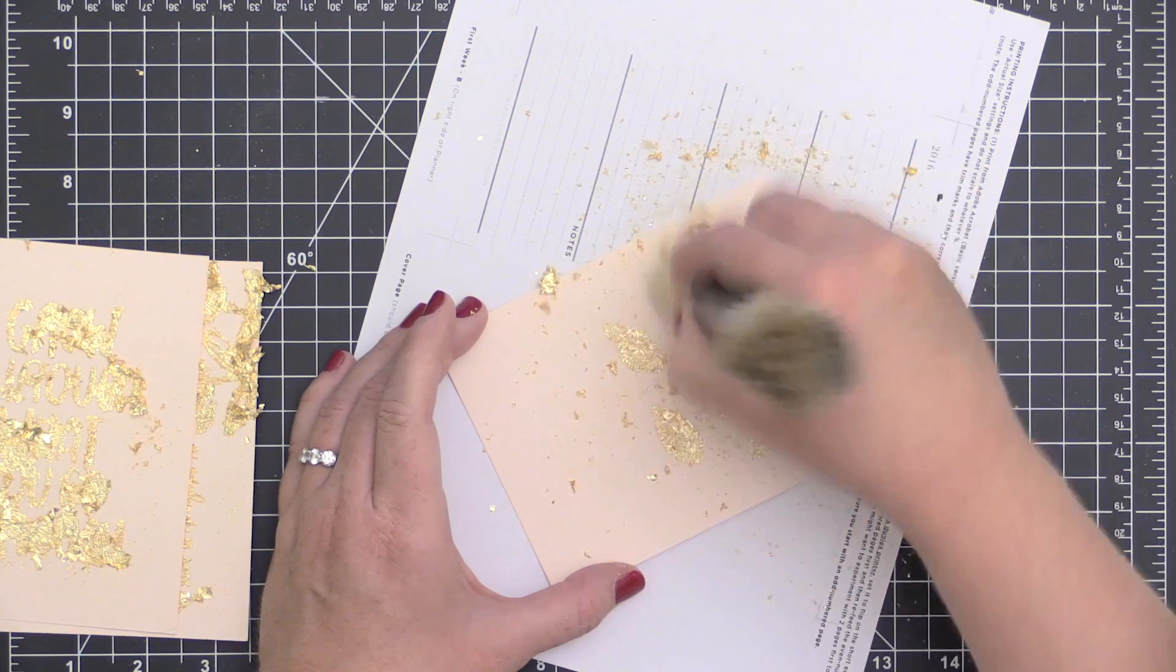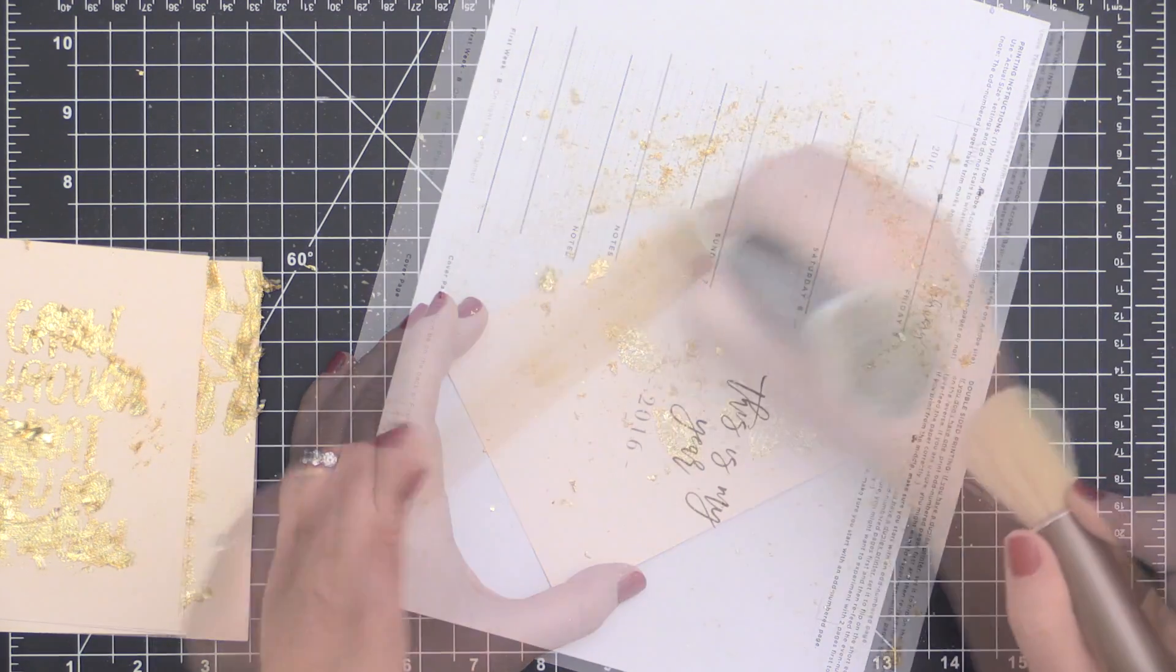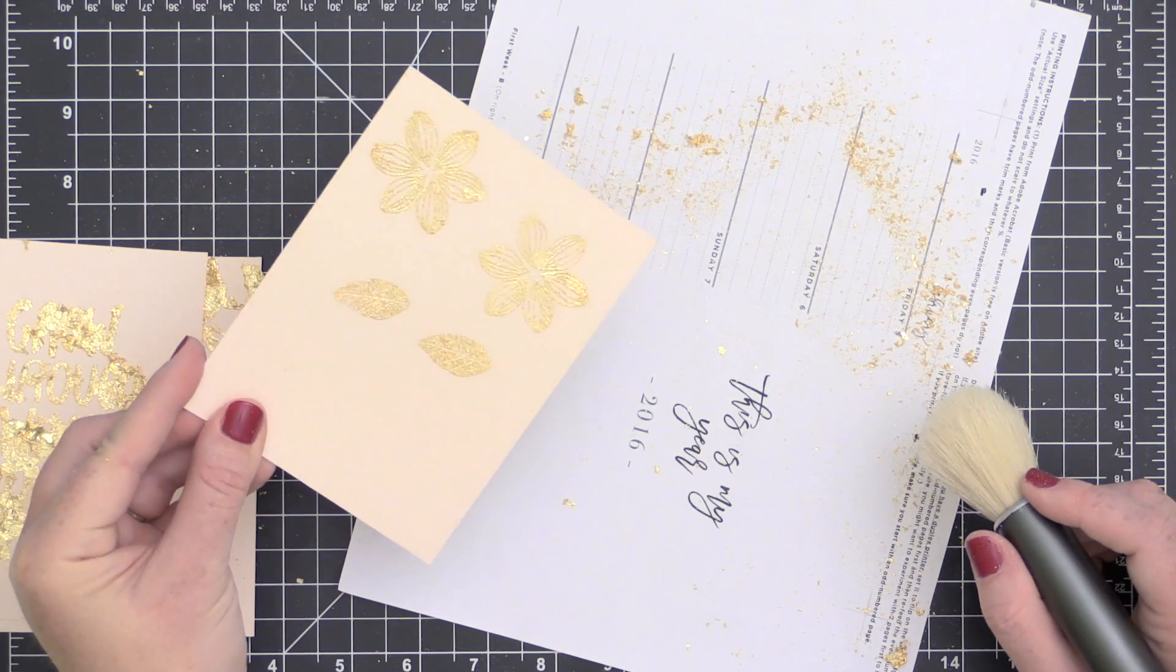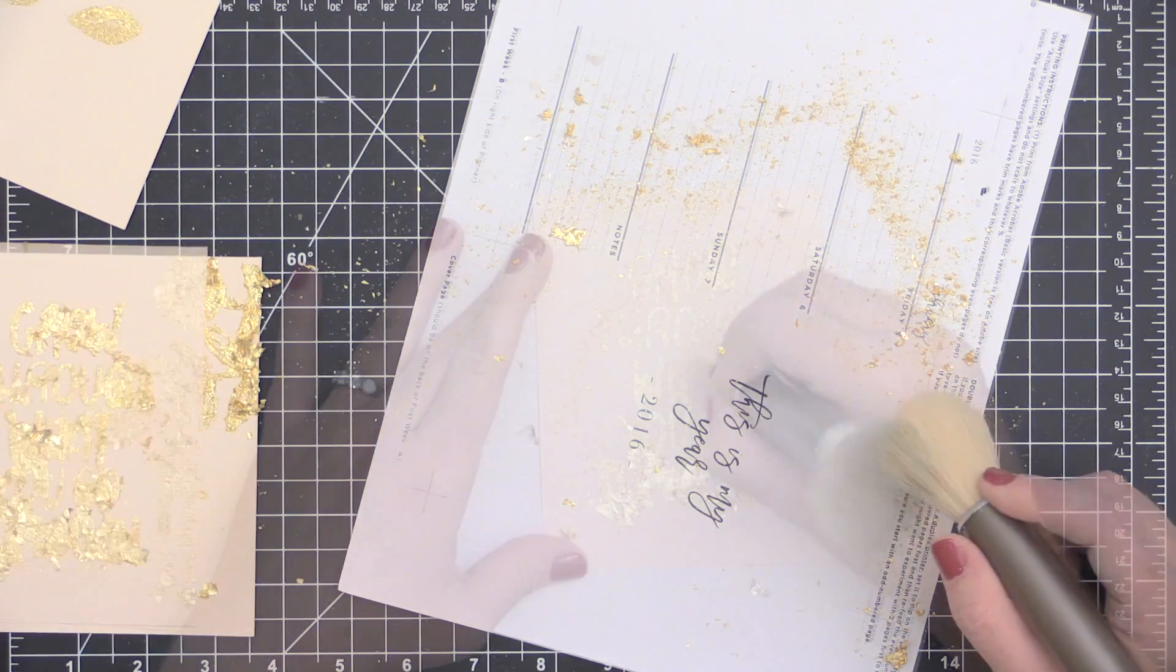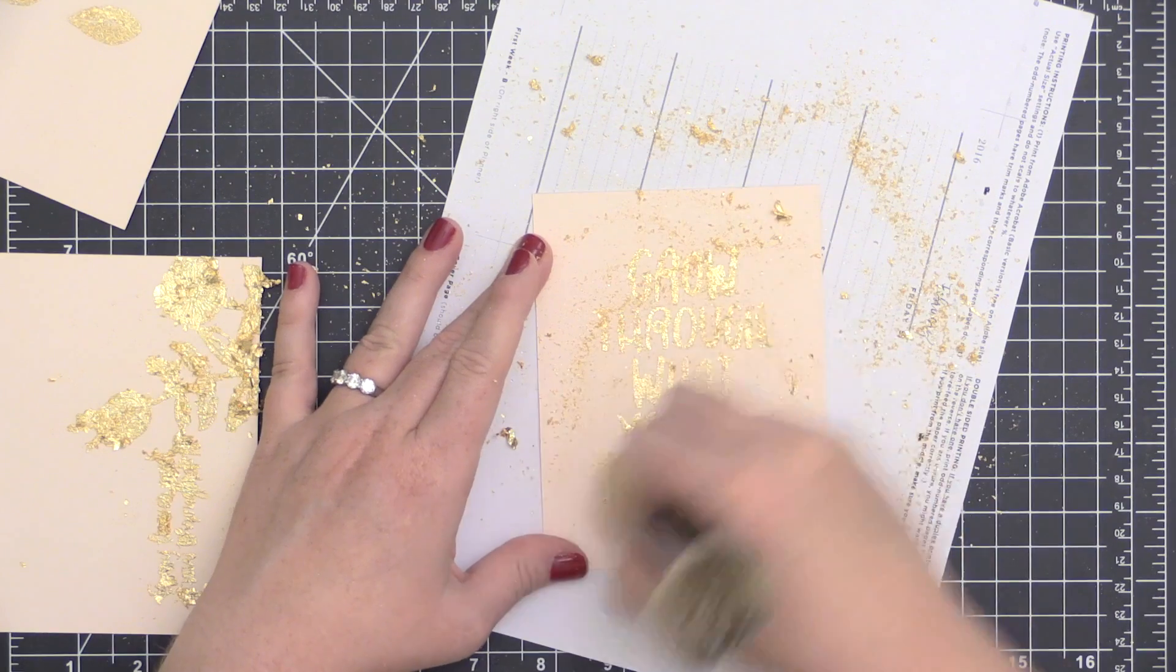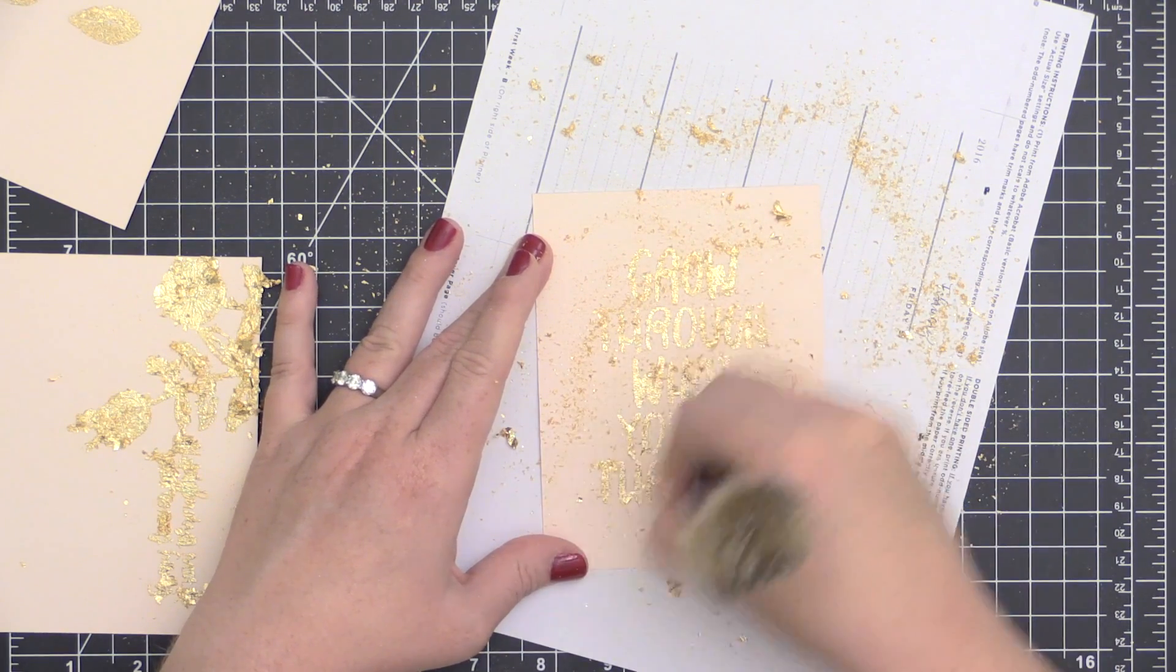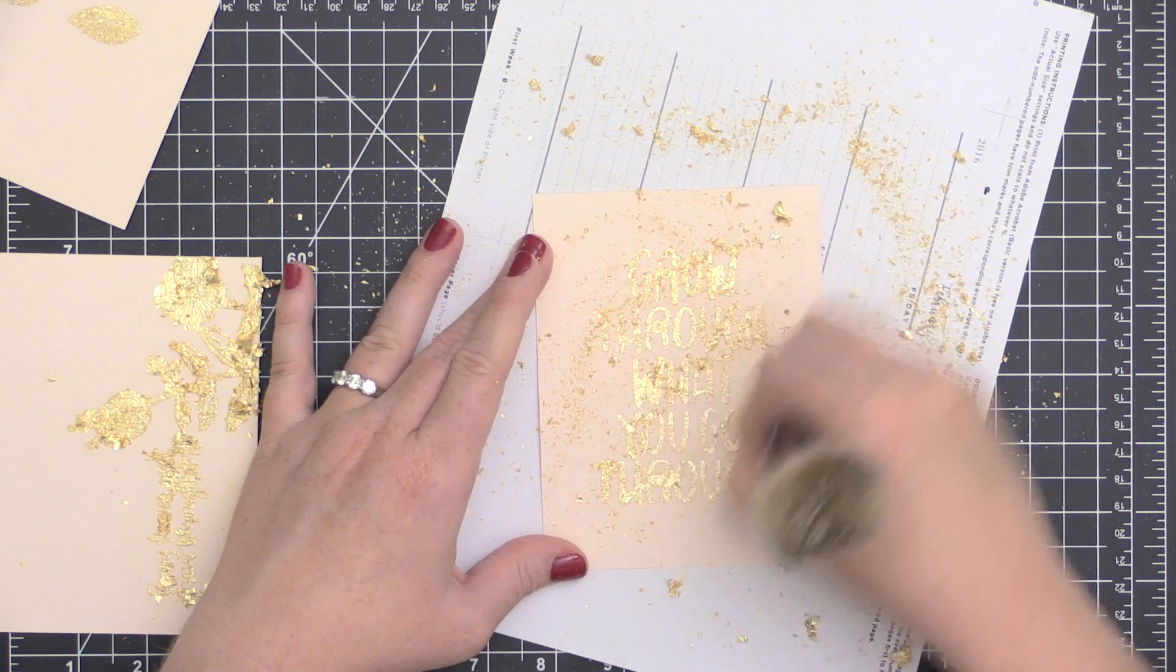After I have impressed really well into those stamped images, I'm taking them over to a scrap piece of paper and taking a brush and brushing away the excess. You can see I'm being fairly aggressive with this. I'm not being really light with it. When it's set into that embossing powder, it really does stick.